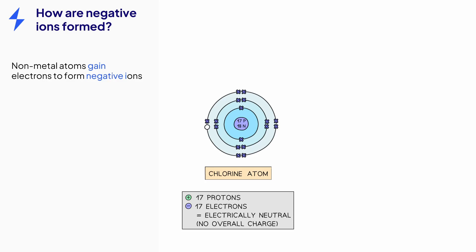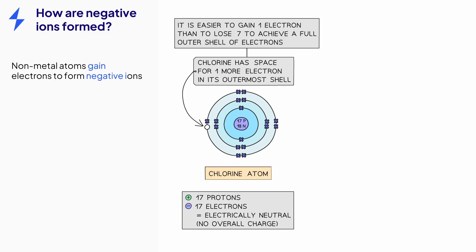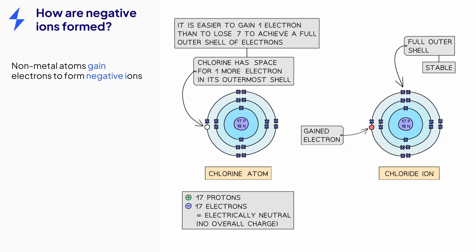Non-metal atoms gain electrons to form negative ions. Again, we will look at an example to explain this in more detail. Let's take chlorine as an example. An atom of chlorine has 17 protons and 17 electrons, so it has no overall charge. Chlorine is in Group 7, so it has 7 electrons in its outer shell, which means it has space for one more electron. Less energy is required to gain an extra electron than would be needed to lose all of its 7 outer electrons. So chlorine gains an electron to form a stable full outer shell.